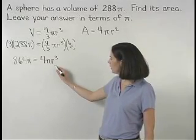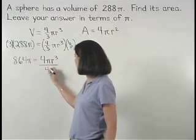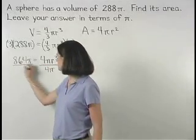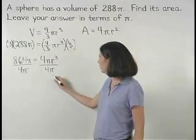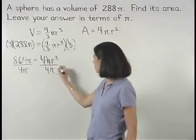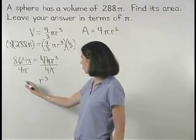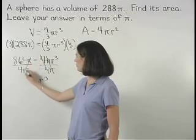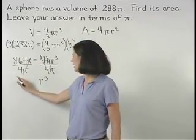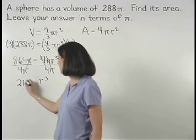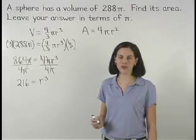Next, to isolate the r cubed term, we divide both sides of the equation by 4 pi. On the right side, the 4 pi's cancel and we're left with r cubed. And on the left side, the pi's cancel and 864 divided by 4 is 216. So we have 216 equals r cubed.